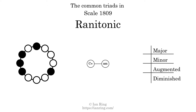Here are the common triads present in this scale. The diagram in the center is a graph of parsimonious voice leading between triads. There are no major triads. There is one minor triad. There is one augmented triad. There are no diminished triads. Here is a Hamiltonian path of parsimonious voice leading that uses all the triads.